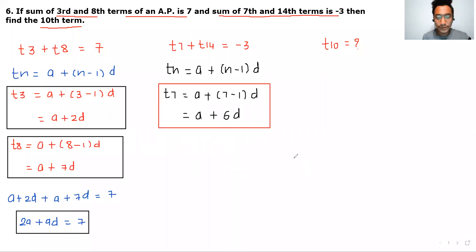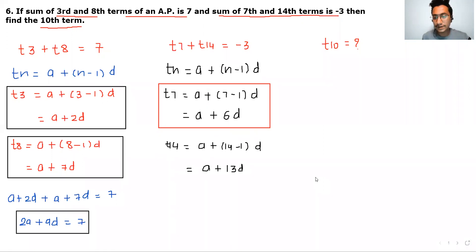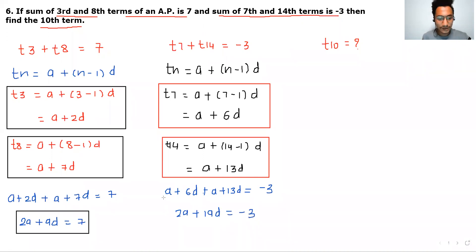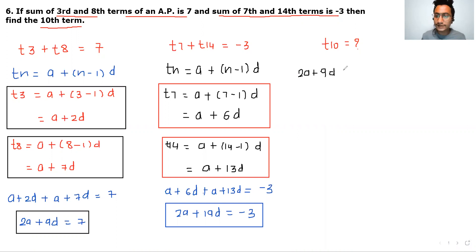Similarly, T7 plus T14 gives A plus 6D plus A plus 13D equals minus 3, so 2A plus 19D equals minus 3. This is the second equation. So the first equation is 2A plus 9D equals 7, and the second equation is 2A plus 19D equals minus 3.